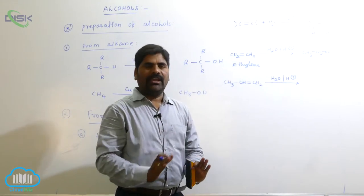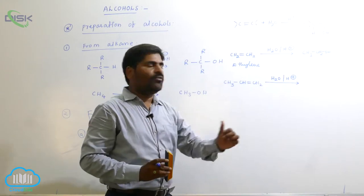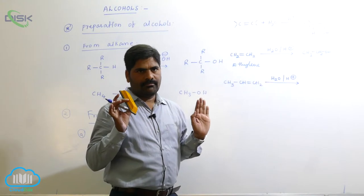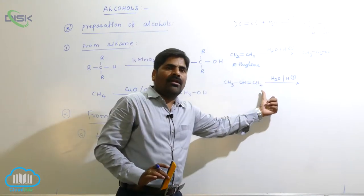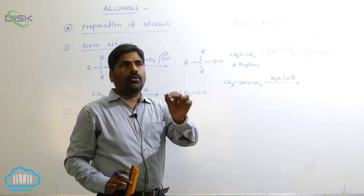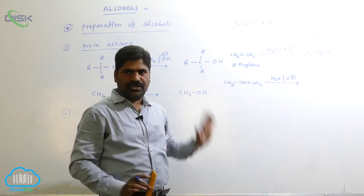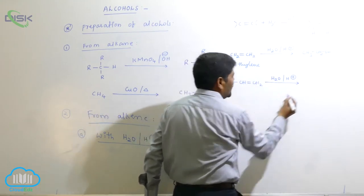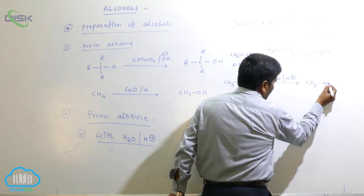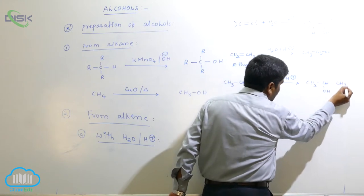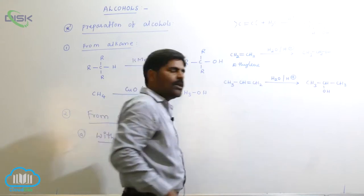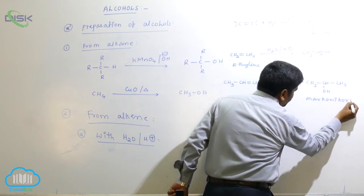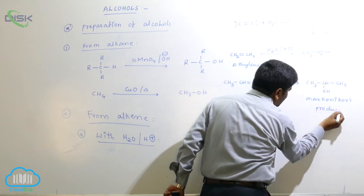OH⁻ is a nucleophile — it comes from the water molecule. This nucleophilic addition takes place at the double-bonded carbon atom which contains fewer hydrogens. So OH is added to that carbon and H⁺ is added to the other, giving CH3-CH(OH)-CH3 as the major product — the Markovnikov product.